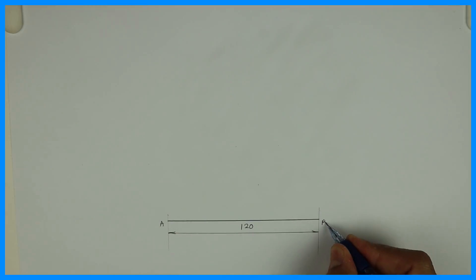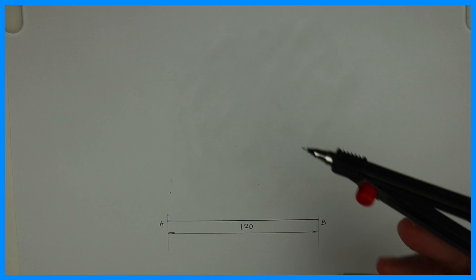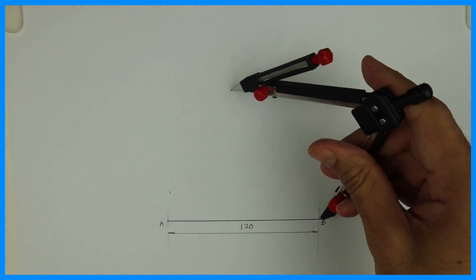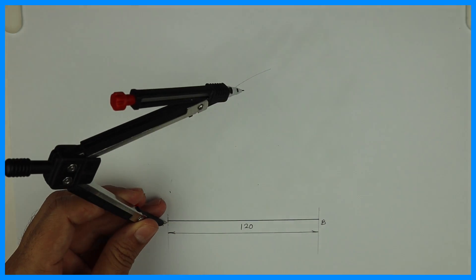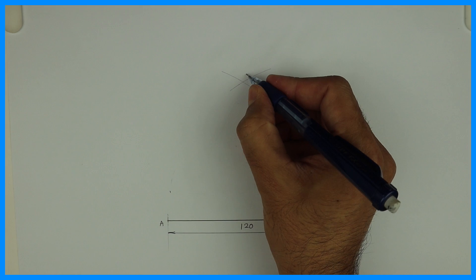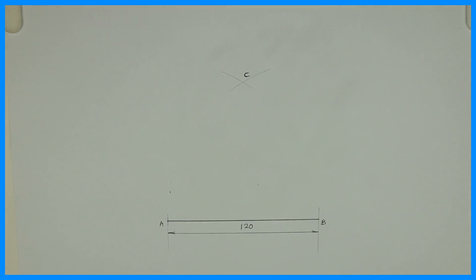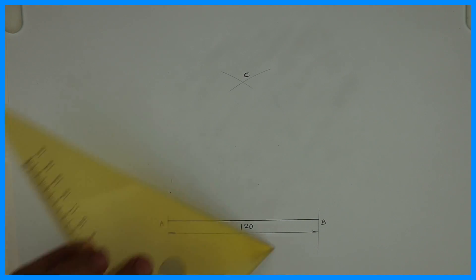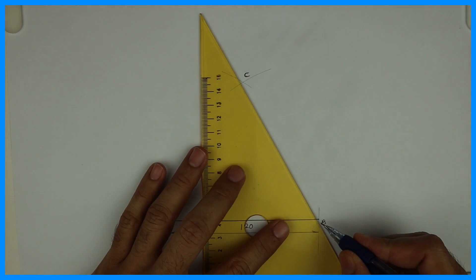This is point A, this is B. I will take B to A in my compass and cut it up. Same way from A, I will take A to B and cut it up, so I'll get an equilateral triangle. That is point C. Then you can join B to C and A to C.